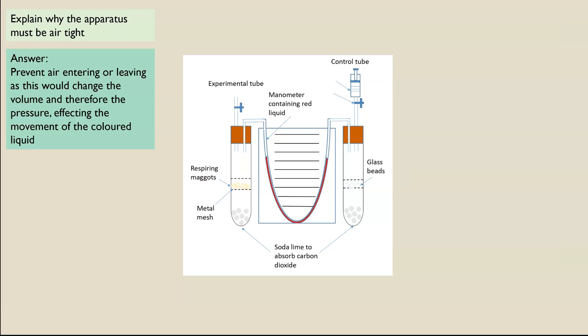So number one, why does it have to be airtight? Well, the whole reason the liquid moves is because of pressure changes. And if any gases could enter or exit, then it would mean that the pressure changes are no longer due to the respiring maggots, it's due to another factor. So it's going to affect the movement of the liquid. So that's why we need to make sure it's completely airtight.